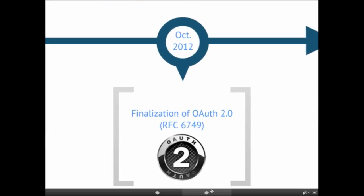Then they started working on OAuth 2.0, which is now RFC 6749. It was under development for a long time — there were 31 draft versions. As a consequence, some service providers implement draft version 12 while others implement draft version 23, and those are not the same. Hopefully, now that it has been finalized, this will dim out and we'll have one standard everyone can use.